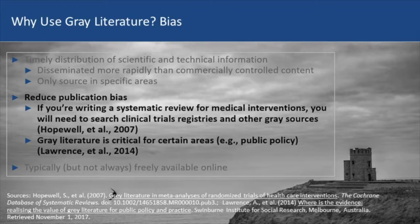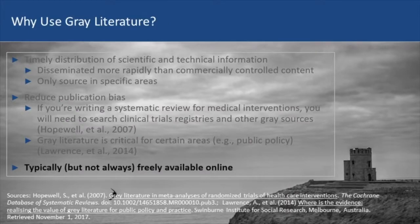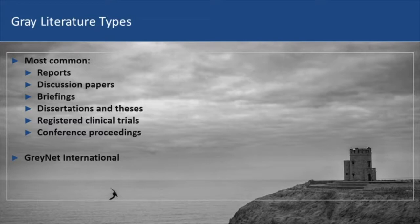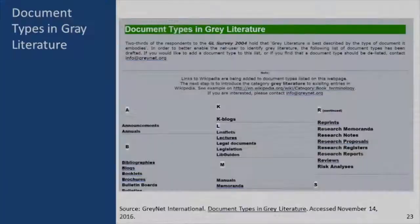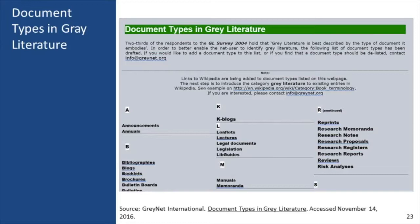In some areas like public policy, you have to use gray literature — that's the material you're studying. Another reason to use it: it's typically, though not always, freely available online or outside of commercial publishers' limitations. Some of the most common types of gray literature include reports, discussion papers, briefings, dissertations and theses, registered clinical trials, and conference proceedings. That list comes from GrayNet International, and their approach is to catalog the types of gray literature — the five or so I listed are among more than 150 different types, including brochures, handouts, and all sorts of things.